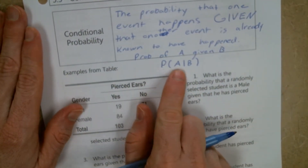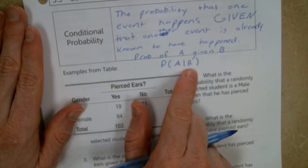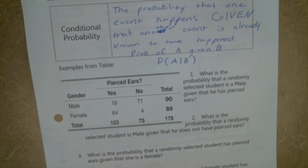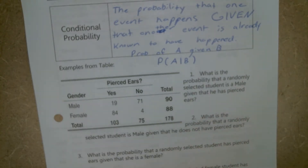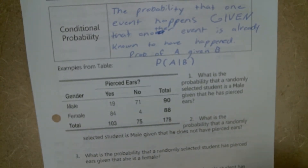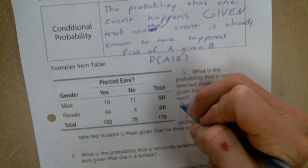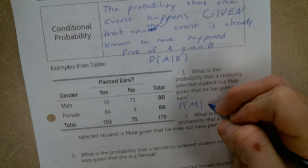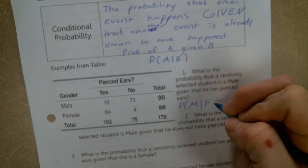So we read this as the probability of A given B. If you know B has happened, if you know B is true, what's the probability of A? So we're going to look at a couple of questions here to get used to the notation. This says: what is the probability that a randomly selected student is male given that he has pierced ears? This is basically saying, what's the probability of being male given that the ears are pierced?